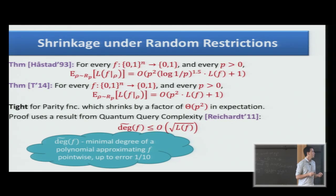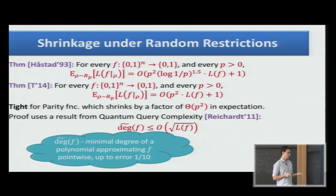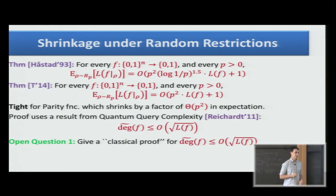A little bit about the proof. The proof uses a result from quantum query complexity, which is kind of surprising because we are talking about formulas under classical operation. This result tells us that for any function, there exists a polynomial of degree square root of the formula size who approximates it point-wise. On any point in the Boolean hypercube, the polynomial and the function differ by at most 1 over 10. This result was proved using a quantum algorithm. I don't know if there exists a classical proof for that. So this is the first open question: give a classical proof for this result, which talks about polynomials and formulas, nothing about quantum. You can think of this as an instantiation of the quantum method: proving a classical result using quantum arguments.